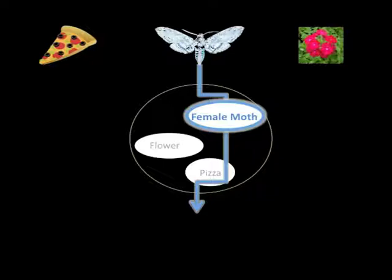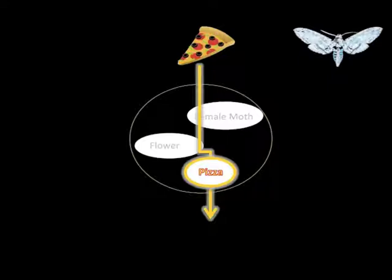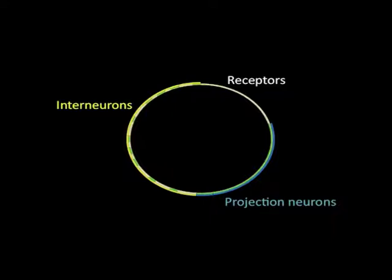Neural codes and their dynamics must be described in detail to unravel the encoding principles of the antenna lobe. Such a description is currently lacking, since the connectome of the antenna lobe is unresolved.